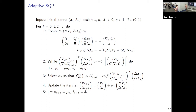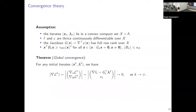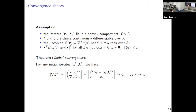One might wonder: is this going to converge? Will this stop in finite time with this while loop? Under reasonable assumptions commonly made in the literature — in particular that the iterates lie in a convex compact set and the objective and constraints are three times differentiable — we can prove convergence. We never compute third derivatives in the algorithm, but they're required for the proof.